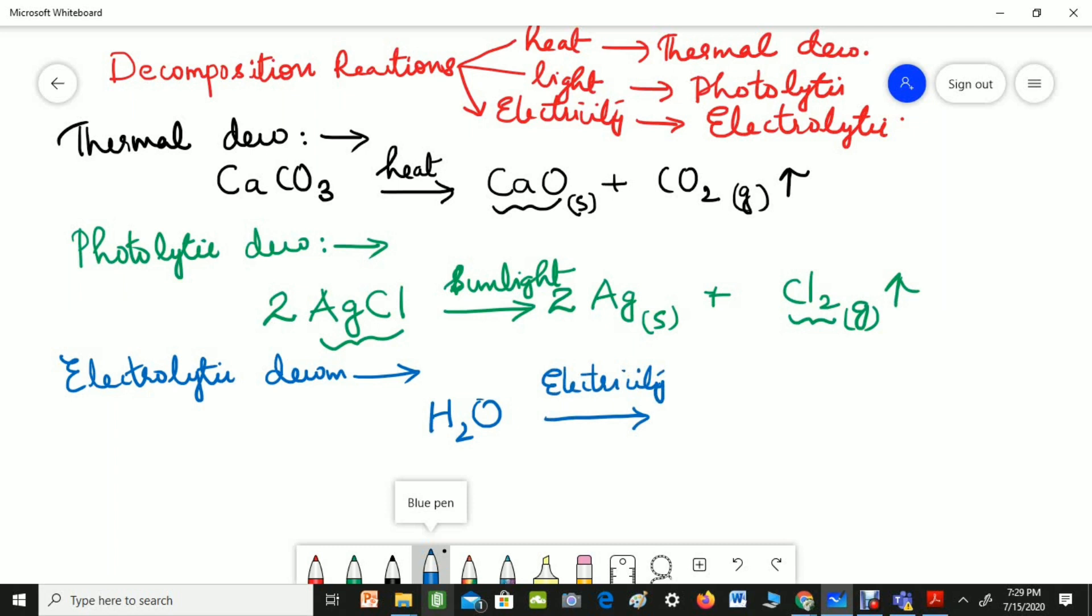When you pass electricity through water, you know what, pure water is not conductive to electricity. So you need to add little acid. When you pass electricity through water, it will decompose to form hydrogen and oxygen. You will get hydrogen plus oxygen, both are gases.